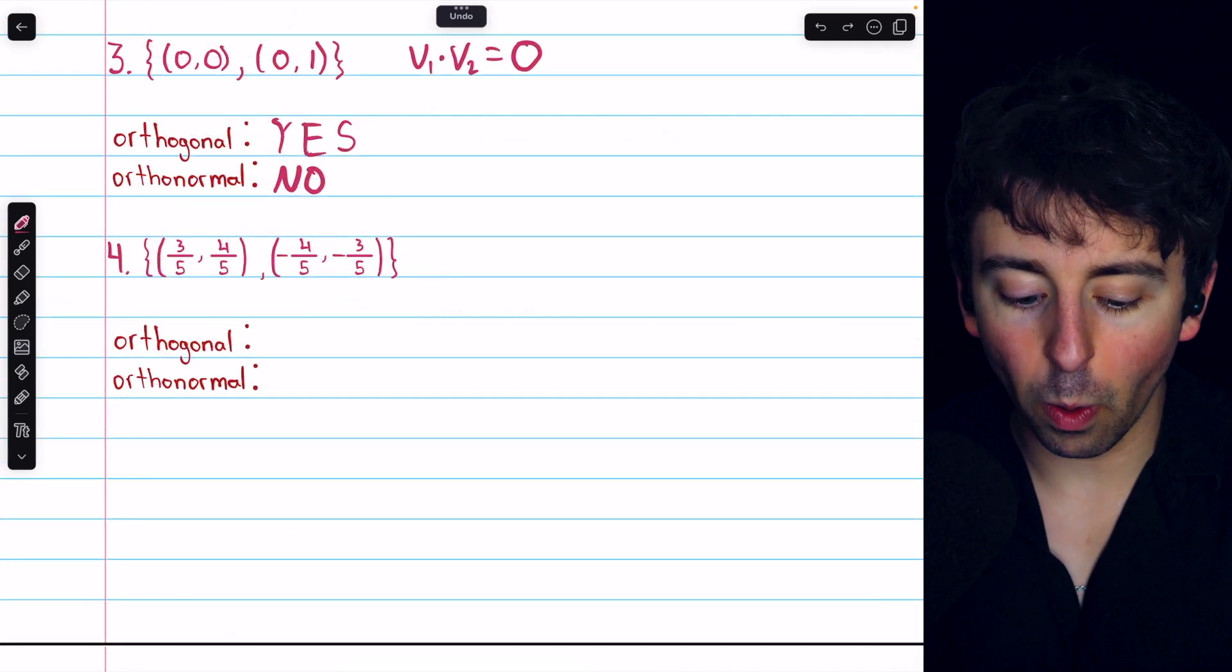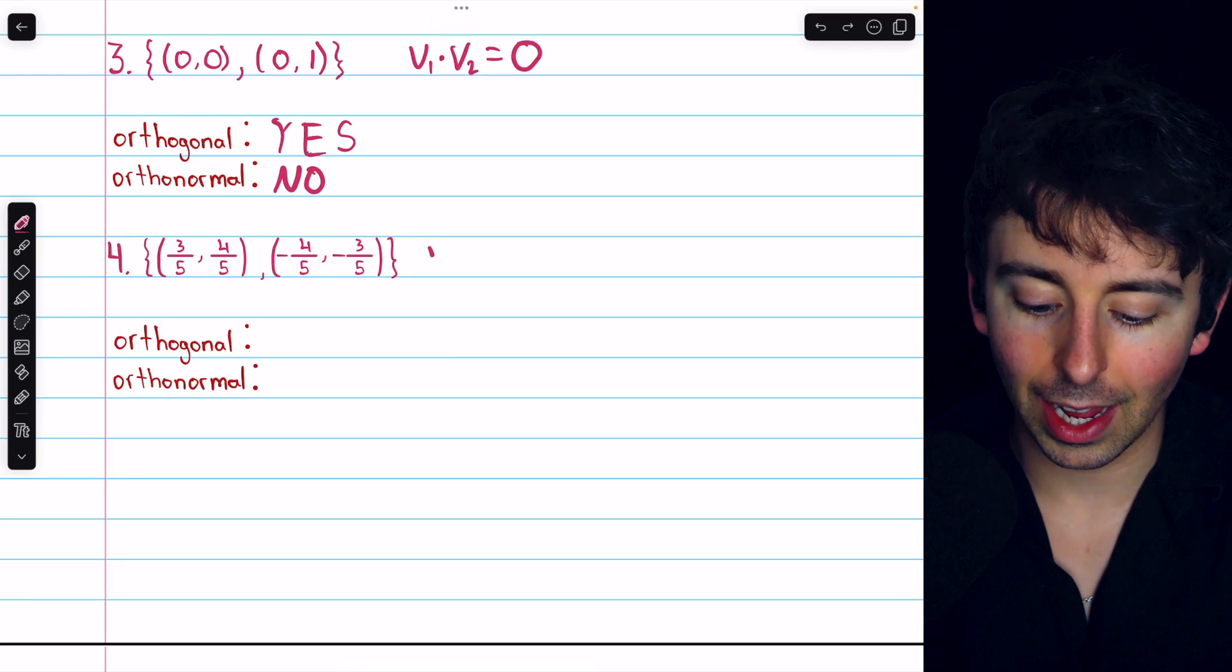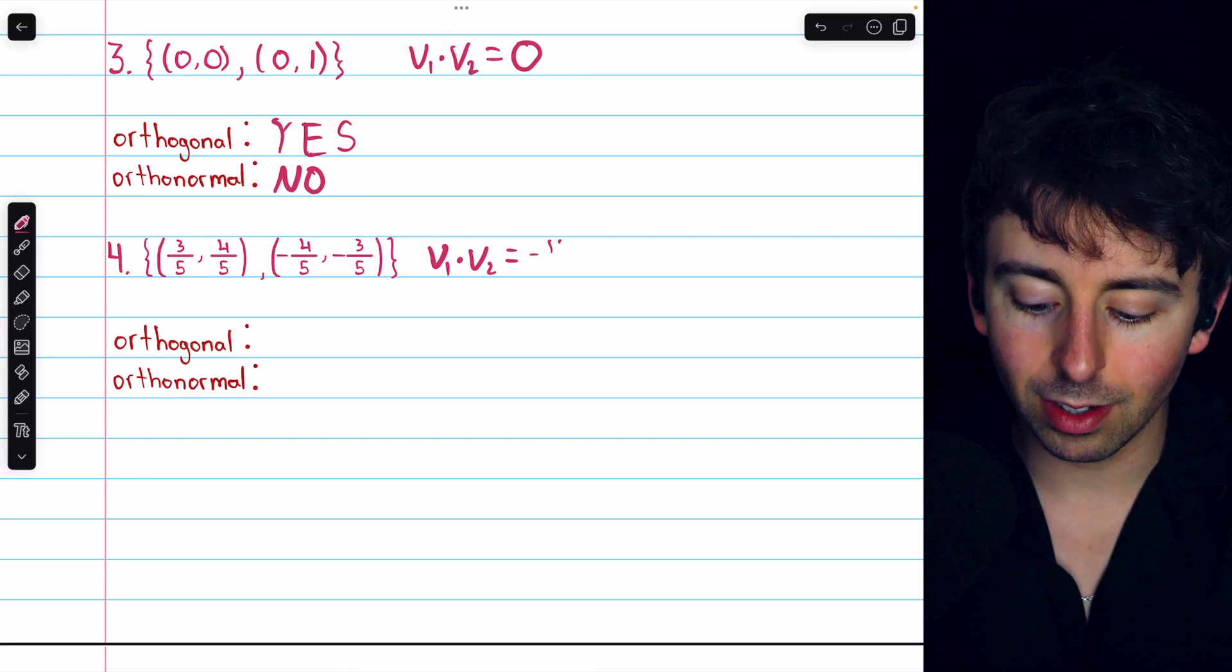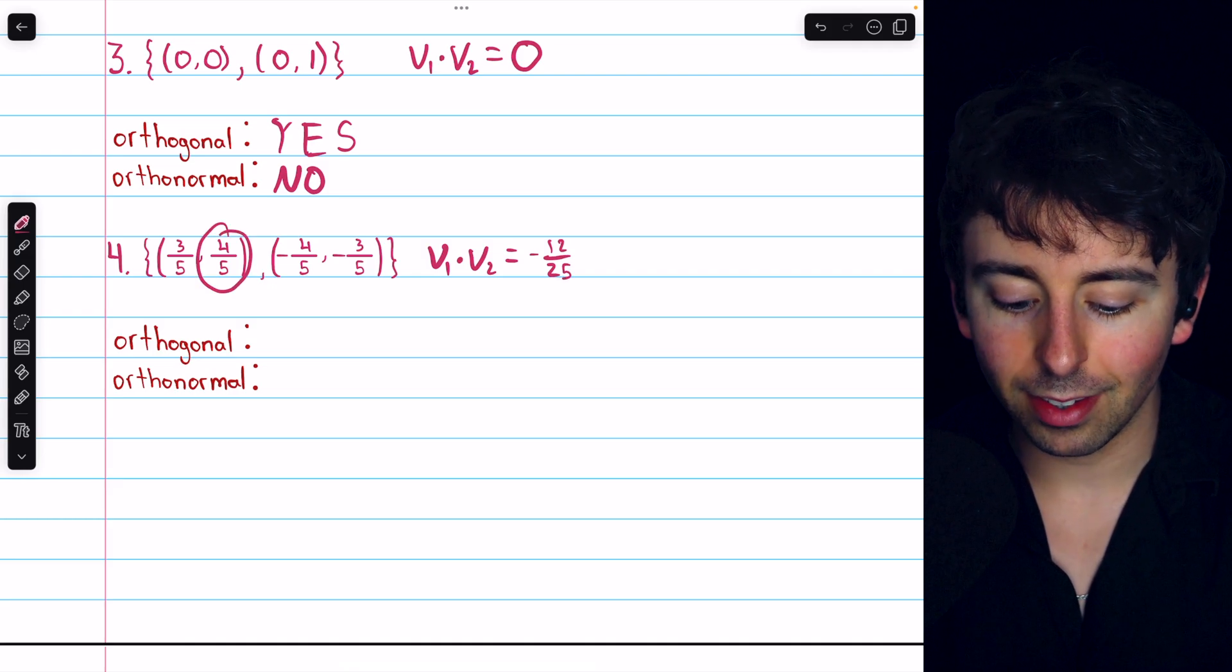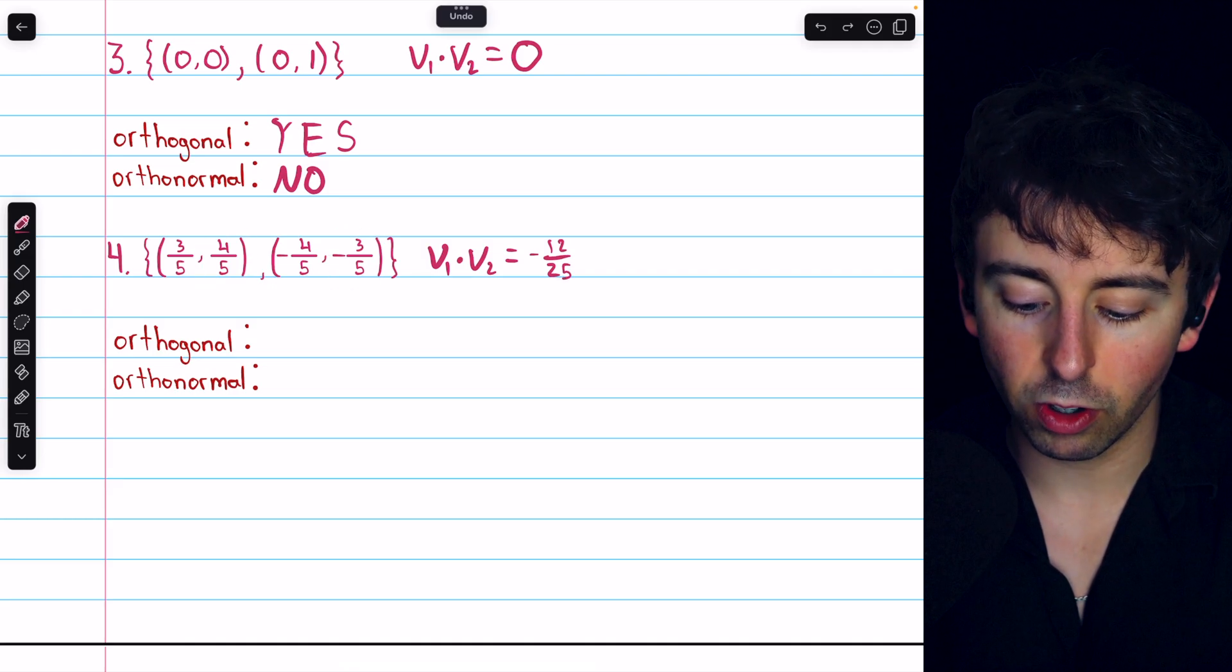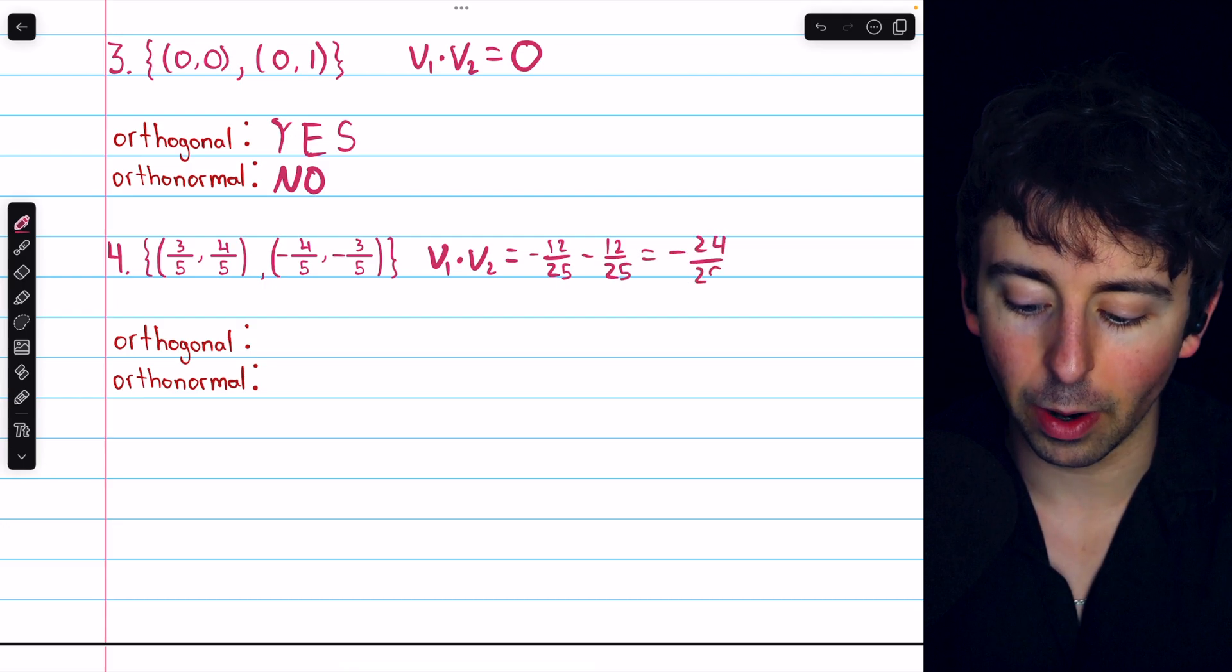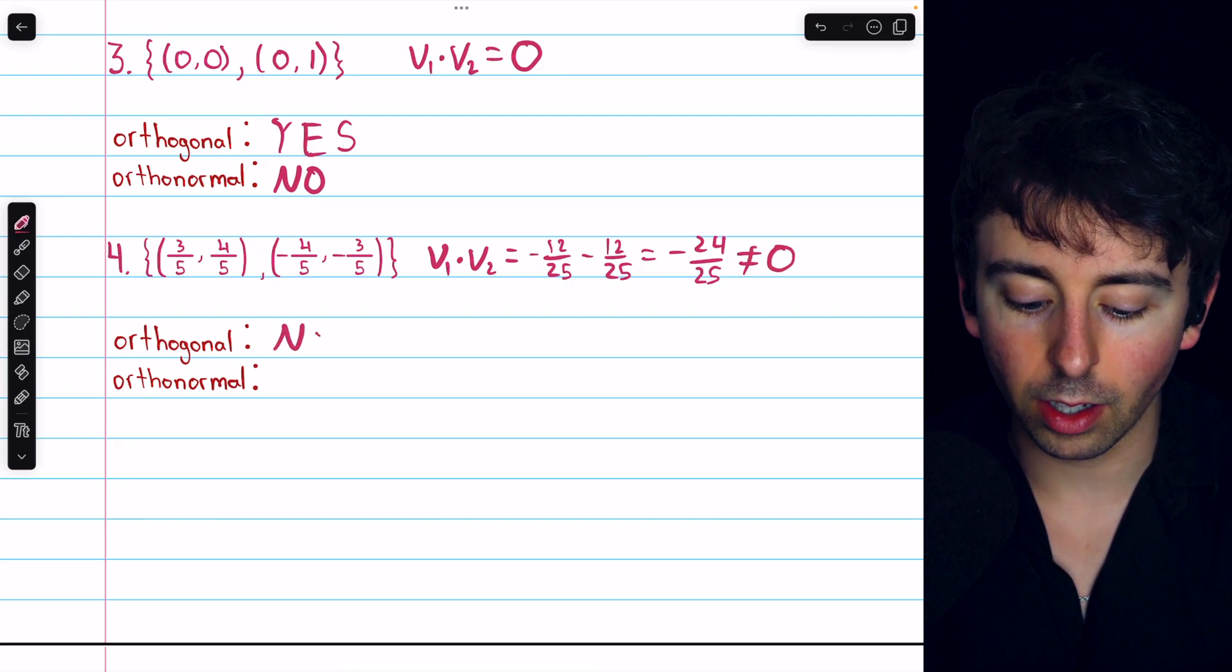Last example, number 4. Are these two vectors orthogonal? Well, we'd have to multiply and add their corresponding components to figure that out. So, let's do that dot product. We have 3 fifths times negative 4 fifths, which is negative 12 over 25. And then 4 fifths times negative 3 fifths, which, again, is negative 12 over 25. Those two terms certainly do not cancel out to 0. So, the dot product is not 0, and so the vectors are not orthogonal.